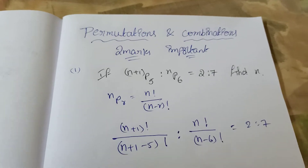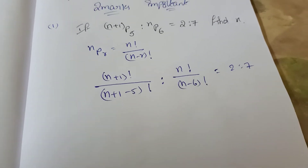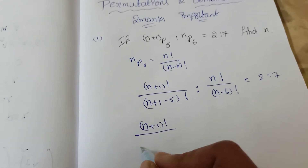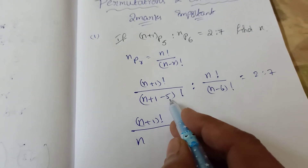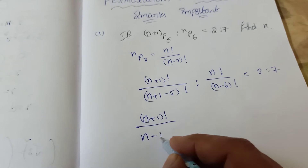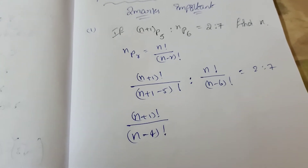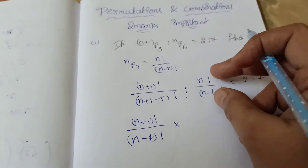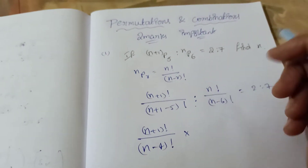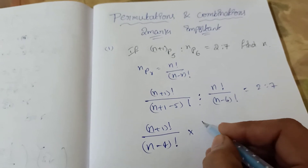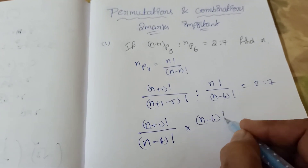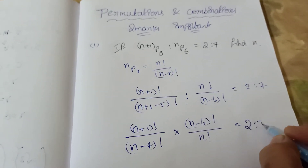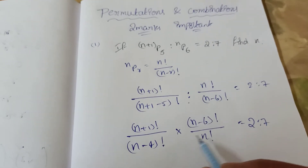So we write: (n+1) factorial divided by (n minus 4) factorial, multiplied by (n minus 6) factorial divided by n factorial, equal to 2 by 7.